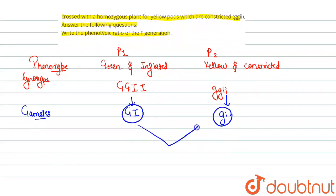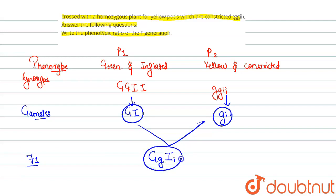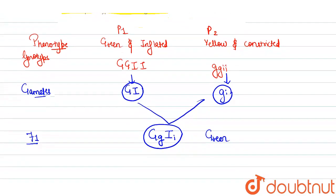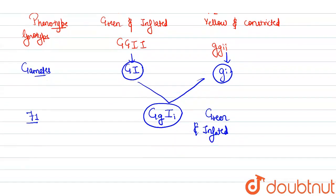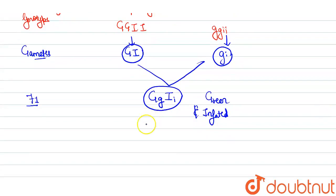The F1 generation will carry capital G small g capital I small i (GgIi). This shows that the plants contain pods that are generally green and inflated.